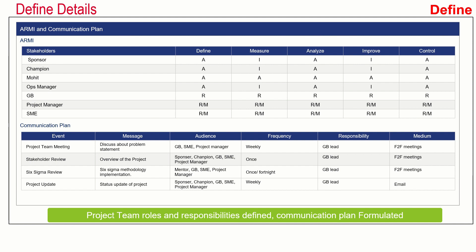The team also created a communication plan in which events were decided — project team meetings, stakeholder reviews, Six Sigma reviews, and project updates. For each event, the plan specifies what message will go out, who the audience is, the frequency of communication, whose responsibility it is, and the medium — whether face-to-face meeting or email.